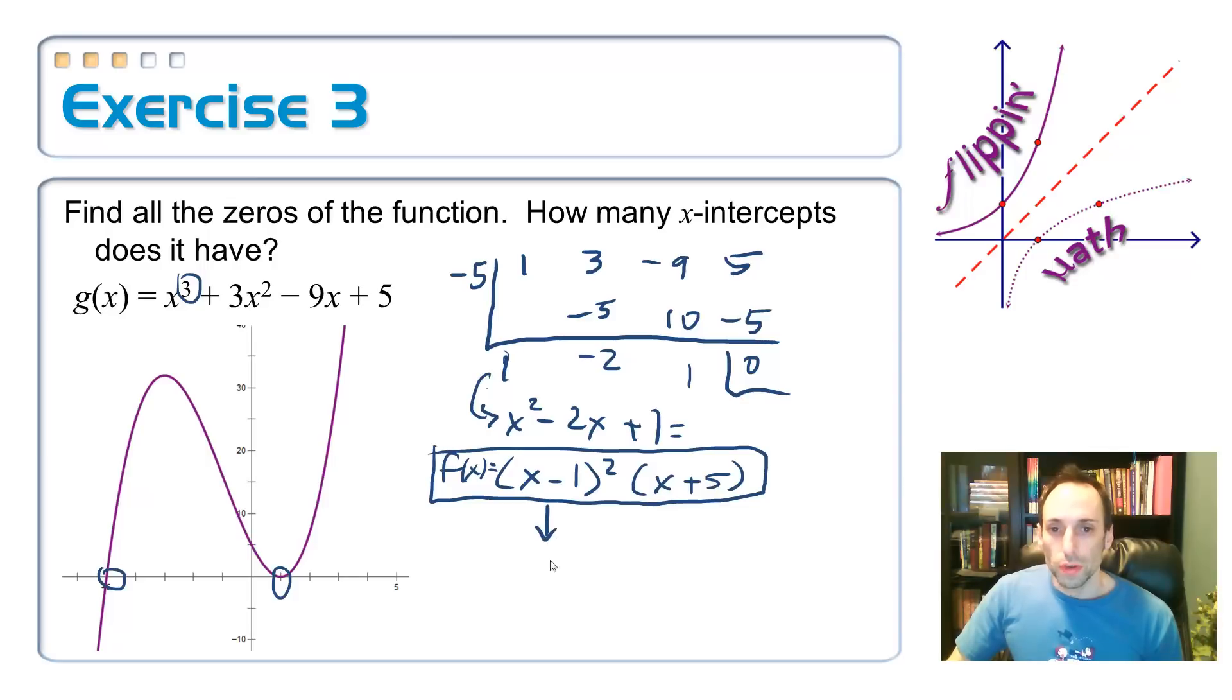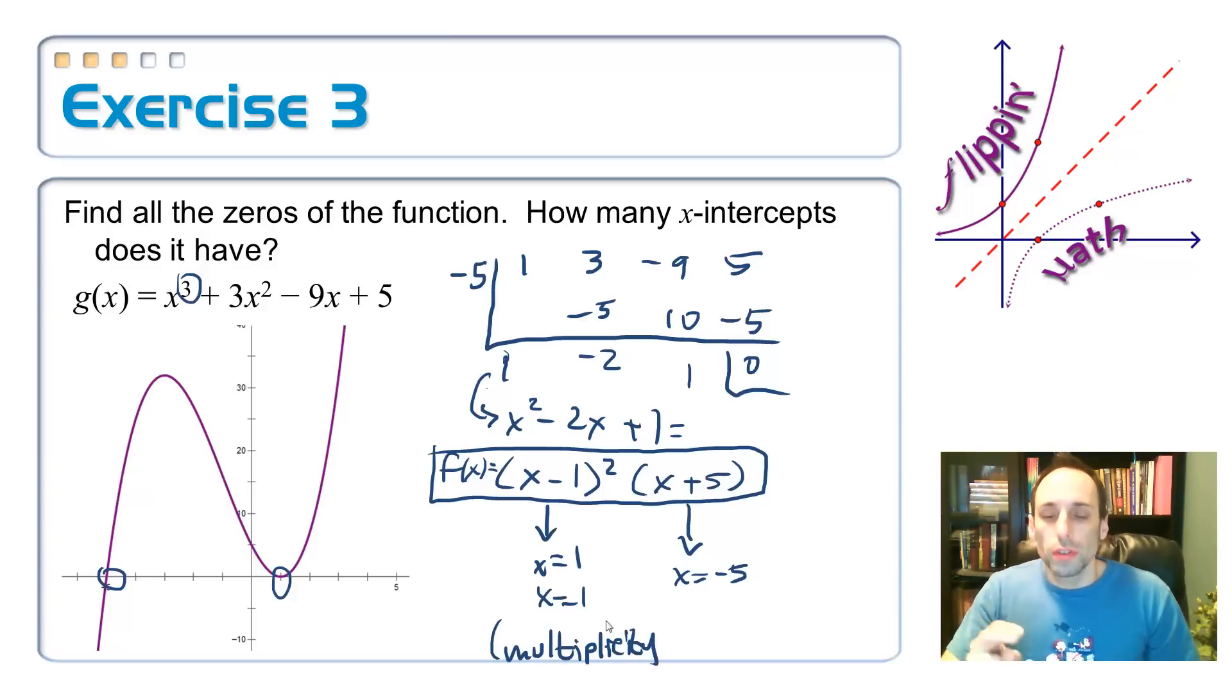So from this first one, I get x is equal to one. From the last one, I get x is equal to negative five. It looks like I only have two zeros there. But really, I have three because the first one, x minus one squared, is like I have x equals one twice. This is called multiplicity. It occurs twice. And you may remember whenever we were doing quadratics and graphing quadratics and talking about those, that if it was a perfect square trinomial, there was only one solution. And that solution happened when the vertex of it was exactly on the x-axis. And that's what's going to happen. So that's one of the things that's going to go together with this little theorem.